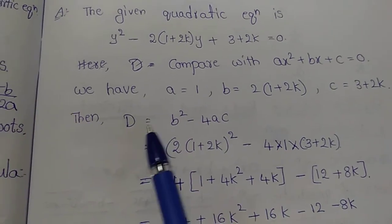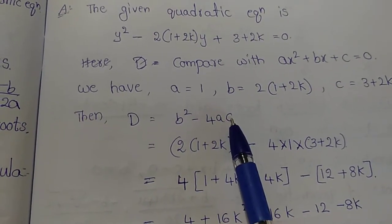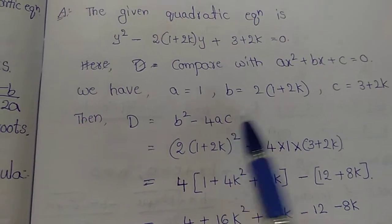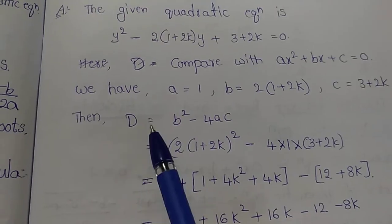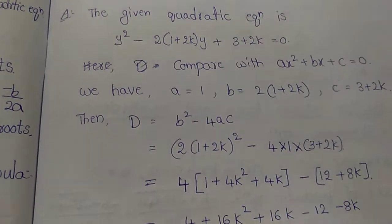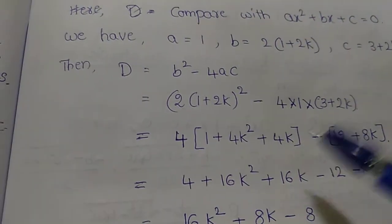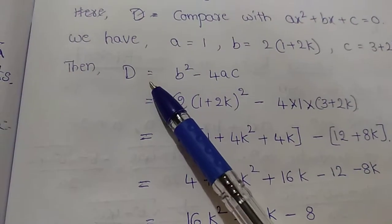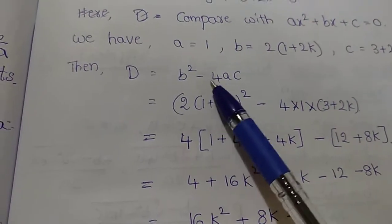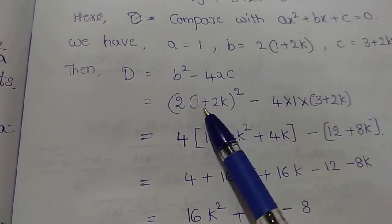The discriminant D equals b squared minus 4ac.